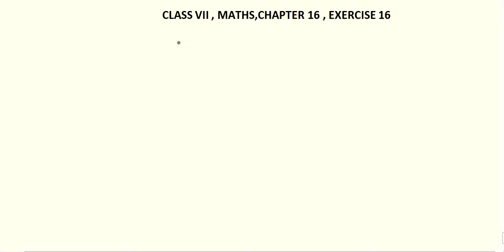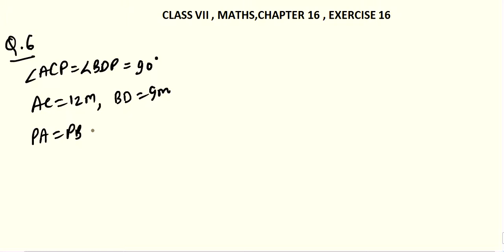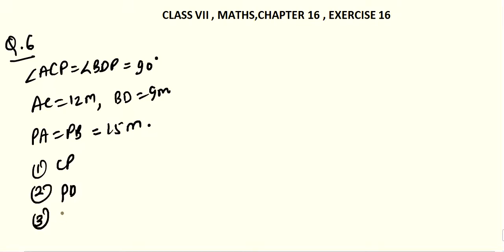Exercise 16, problem number 6. In the given figure, angle ACP equals angle BDP equals 90 degrees. AC equals 12 meters, BD equals 9 meters, and PA equals PB equals 15 meters. We have to find: first, CP; second, PD; third, CD.